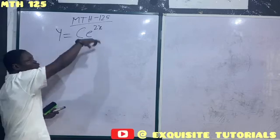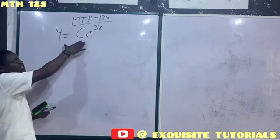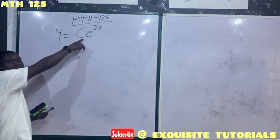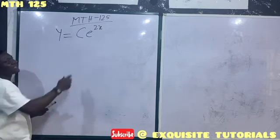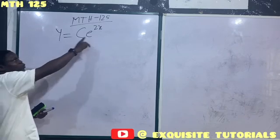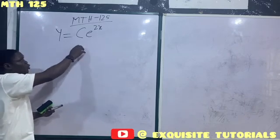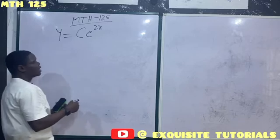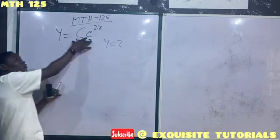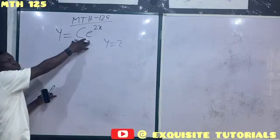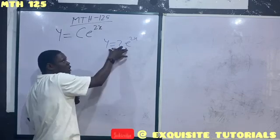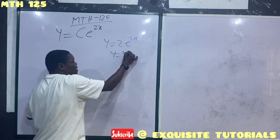This solution to a differential equation is the general solution because there are many particular values of c. But when we assign a value of c — let's say 2 — probably because we know y and x, we use that to get c. When you assign a value of c, it becomes a particular solution, because out of several possible solutions, there is a particular solution you have.